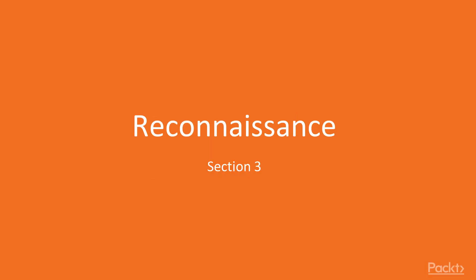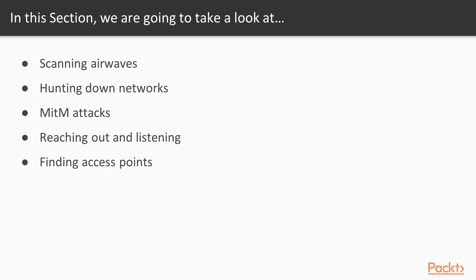Alright, welcome back to Kali Linux Wireless Pen Testing. We're now coming into Section 3 for Reconnaissance. In this section, we're going to learn how to scan airwaves, which is the basic way, hunting down networks, and we're going to go into some more advanced features and techniques. MITM — a man-in-the-middle attack — we'll learn how to reach out and listen to somebody, and then find access points.